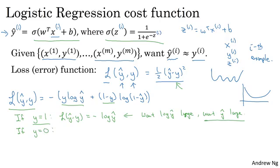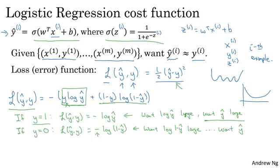The other case is if y equals 0. If y equals 0, then this first term in the loss function is equal to 0, because y is 0. And then the second term defines the loss function, so the loss becomes negative log 1 minus y hat. And so if in your learning procedure you try to make the loss function small, what this means is that you want log 1 minus y hat to be large, because there's a negative sign there. And then through a similar piece of reasoning, you can conclude that this loss function is trying to make y hat as small as possible. And again, because y hat has to be between 0 and 1, this is saying that if y is equal to 0, then your loss function will push the parameters to make y hat as close to 0 as possible.